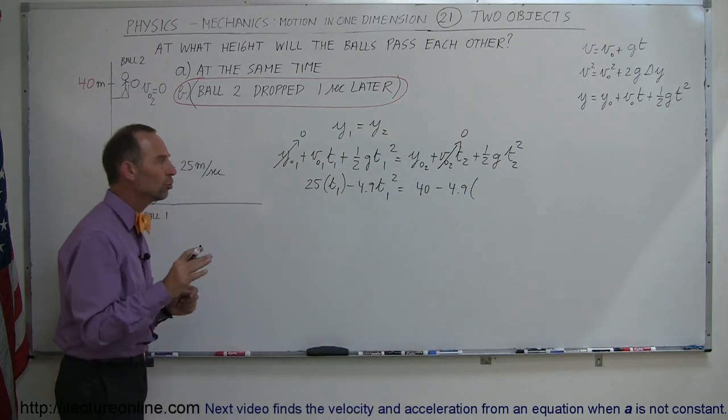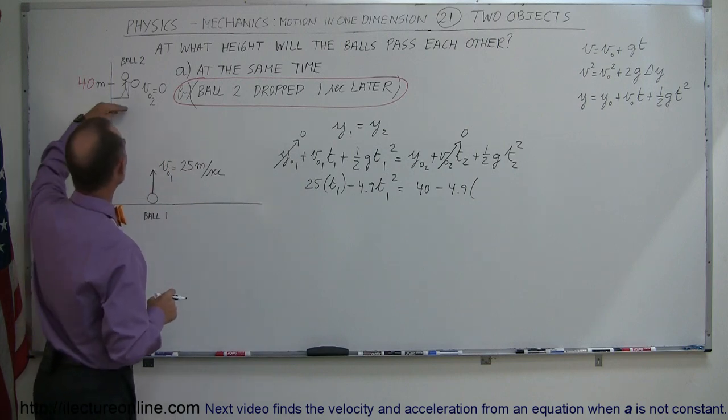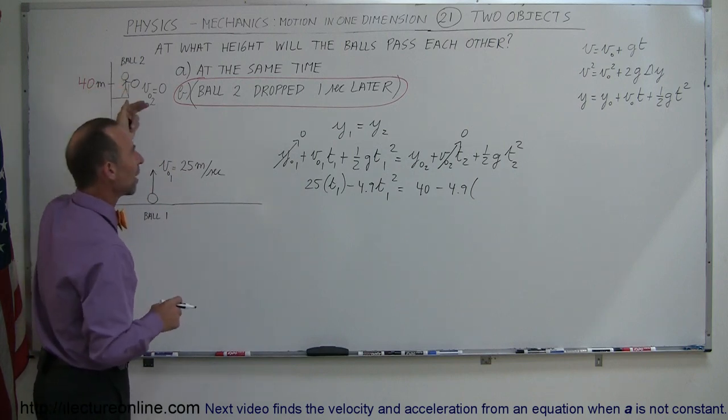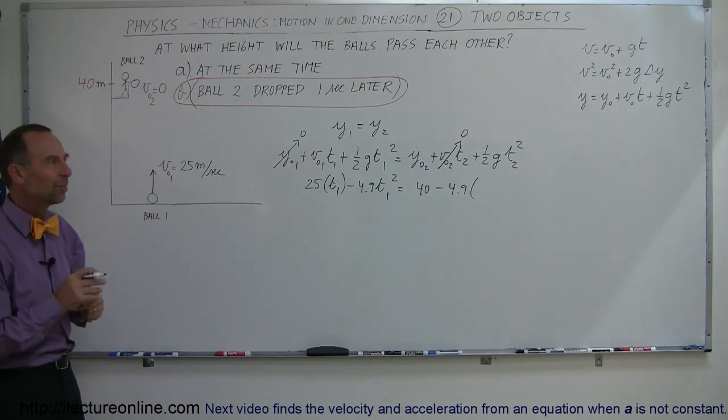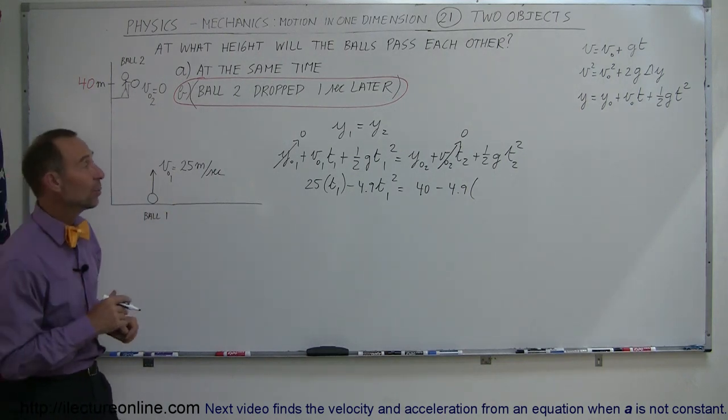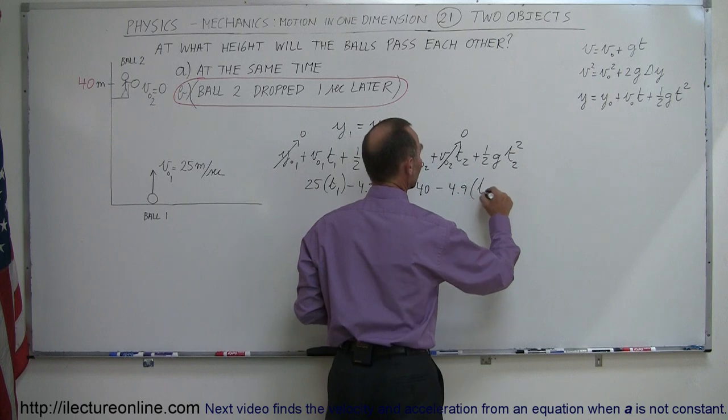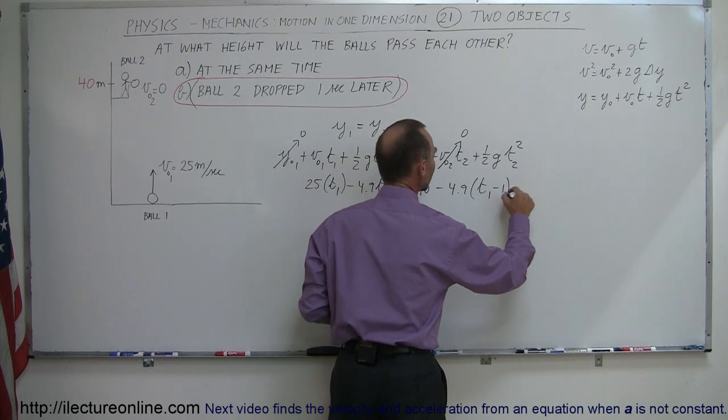What is the relationship between t2 and t1? Well, t2 is a time for ball 2 and it was dropped one second later. That means t2 is one second less than t1, so we have to write t1 minus 1 quantity squared.